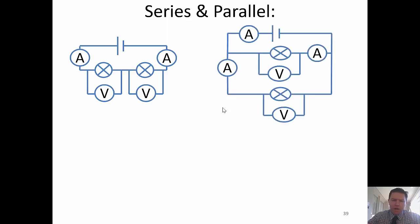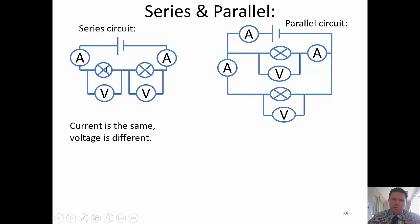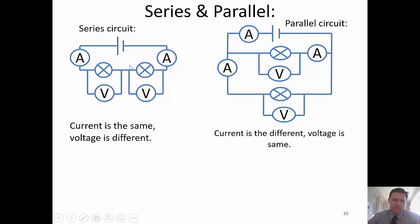In a series circuit, Mike Wazowski has to go through each component in turn. In a parallel circuit, he has to make a choice — does he go through this branch or that one? In series, the bulbs share the voltage: voltage across bulb one plus voltage across bulb two equals supply voltage. In parallel, each branch gets the full supply voltage. Current is the same throughout a series circuit; in parallel, the branch currents add up to the supply current.